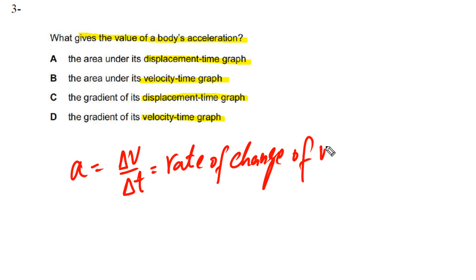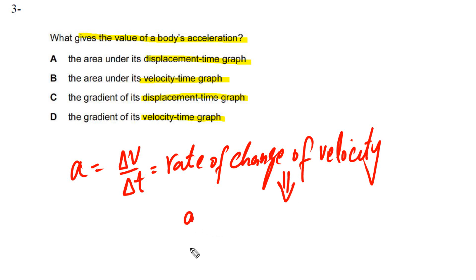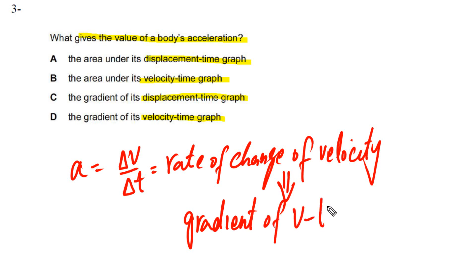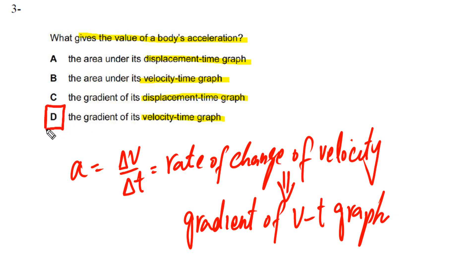Since acceleration is the rate of change of velocity, we can find acceleration from the gradient of the velocity-time graph. The gradient of the v-t graph gives us acceleration. So the answer is B.